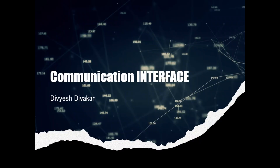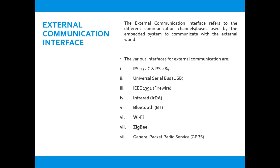Welcome. In the previous video we discussed onboard communication interfaces. In this video we will be looking at external communication interfaces in terms of embedded systems. External communication interface refers to different communication channels or buses used by the embedded system to communicate with the external world — communication not within the board or the same PCB.